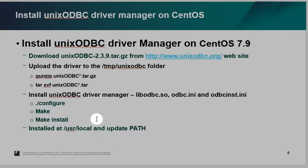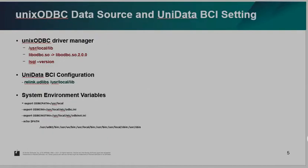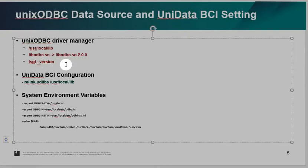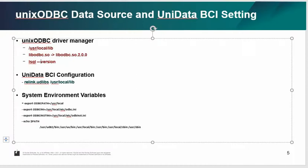The new Unix ODBC driver manager will install to the user local folder — so they are two different locations. You need to understand which one you want to be used. The driver manager for the new one will install to /usr/local/lib. You will also see the iSQL command showing a different version — it should be the iSQL unixODBC version.